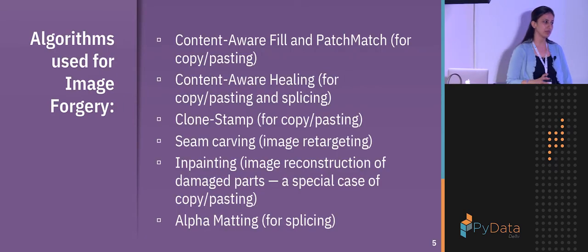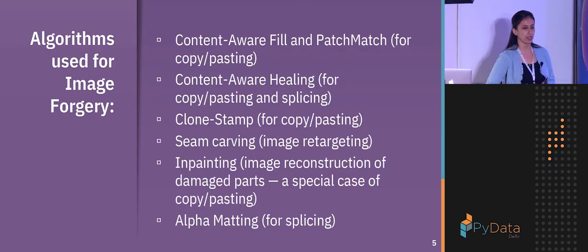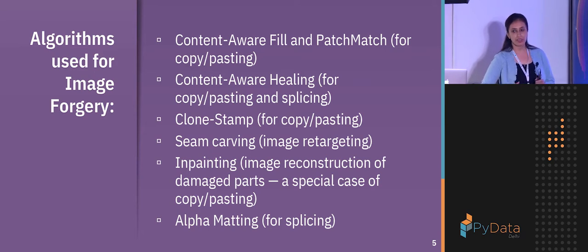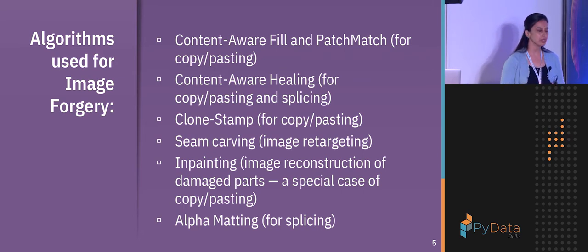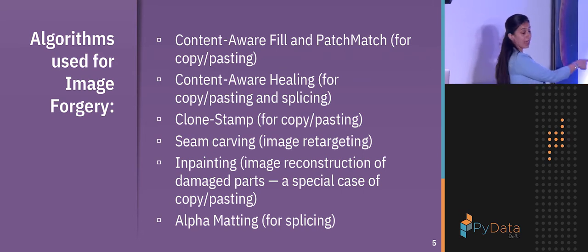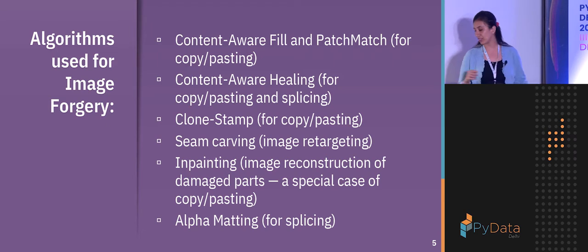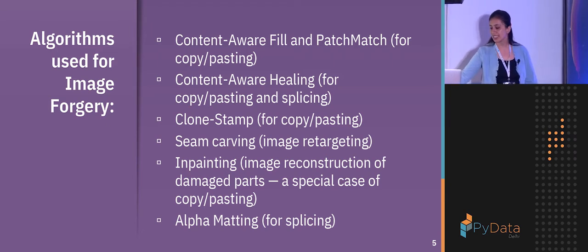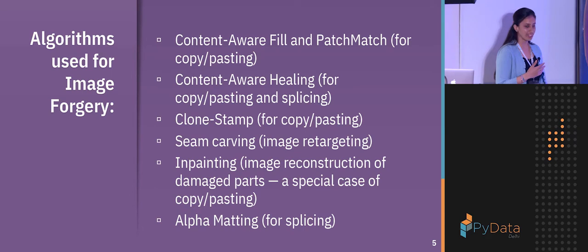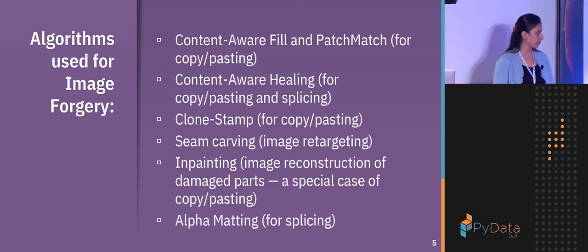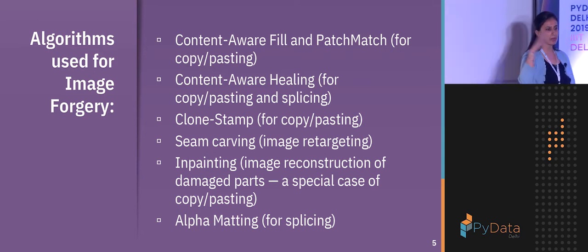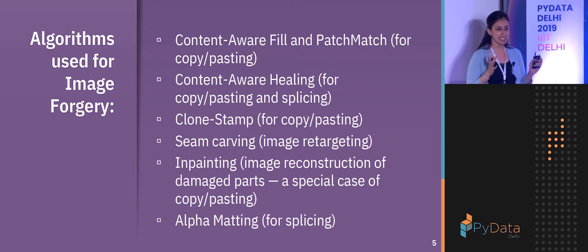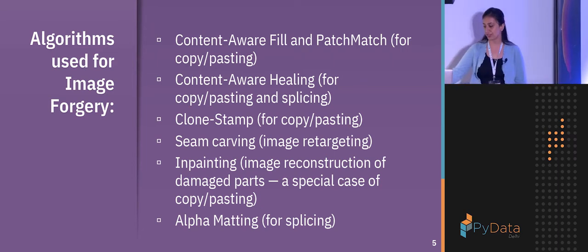The most common techniques in Photoshop used to modify images include: one way is that we just change the background, which is known as alpha matting — the foreground remains the same. Another way is that we pick up one object from another image and paste it there. These techniques are commonly used to modify images.